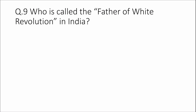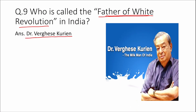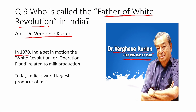Question 9: Who is called the father of the White Revolution in India? Answer: Dr. Verghese Kurien. He is also known as the Milkman of India. In 1970, India set in motion the White Revolution, or Operation Flood, related to milk production. Today India is the world's largest producer of milk.